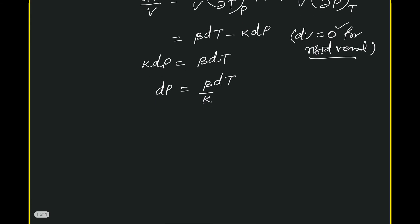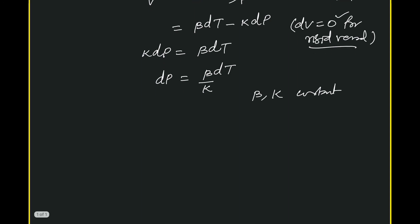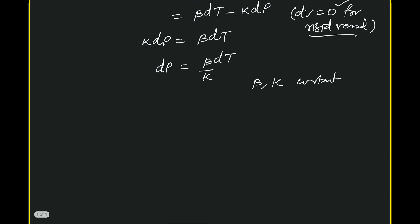And it is also given that β and κ are constant for the given ranges of pressure and temperature involved. So because β and κ are constant, we can integrate this above equation, which is simply ΔP = (β/κ) ΔT = (β/κ)(T₂ - T₁).